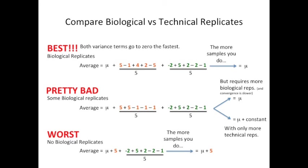The best situation is when we have lots of biological replicates. When this happens, both variance terms go to zero the fastest. So when we use our sample to calculate the average read counts for gene X, we end up with an unbiased estimate of mu, the average for all mice. This is a value that could be reproduced in any lab all around the world. The moral of the story is, use as many biological replicates as you can. If you use technical replicates, you run the risk of biasing your result, because the biological variation term won't go to zero nearly as fast as it could have.